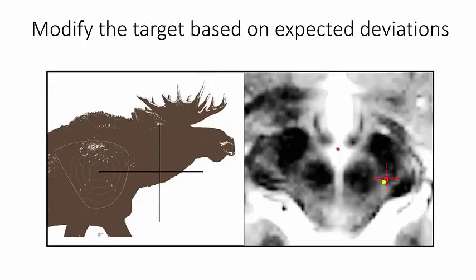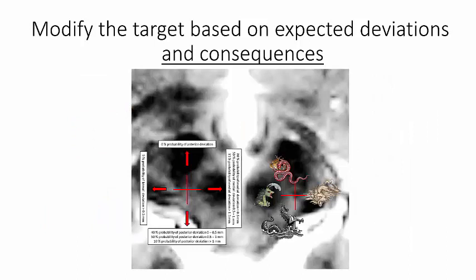We modify the target based on the expected deviations. In this example here, I know that I am likely to end up in the yellow spot if I aim for the red spot. We modify the target according to this, but also in accordance to the consequences of deviations in different directions. For example, here in the zona incerta, a medial deviation of 2 mm will not be a problem, while a lateral deviation might get you too close to the internal capsule.